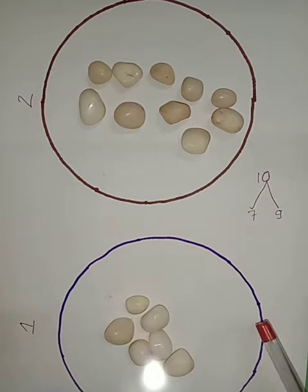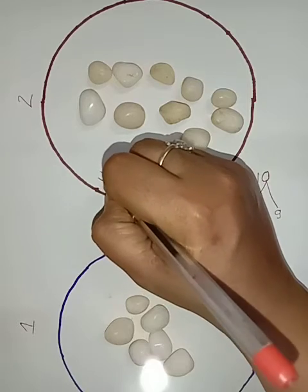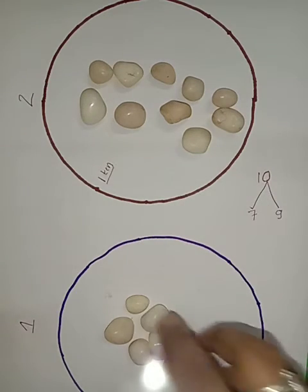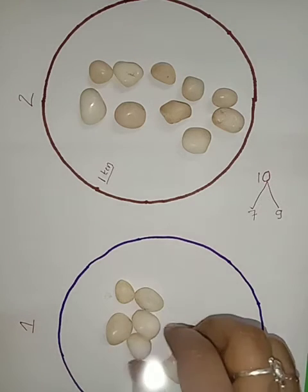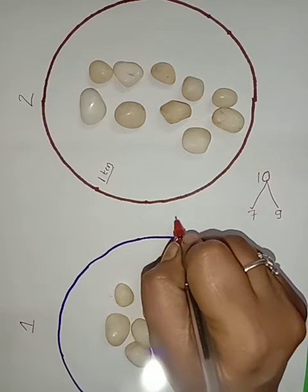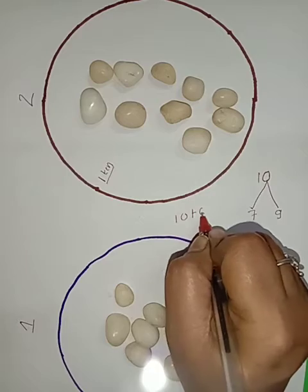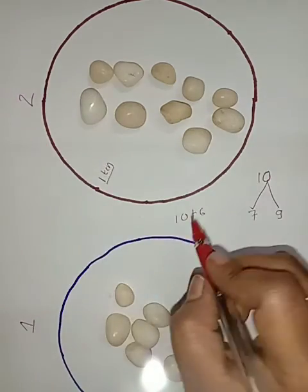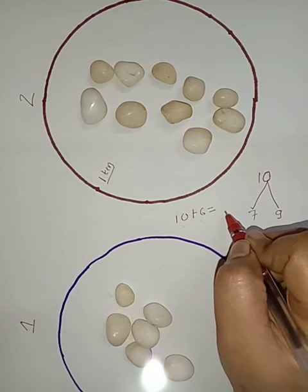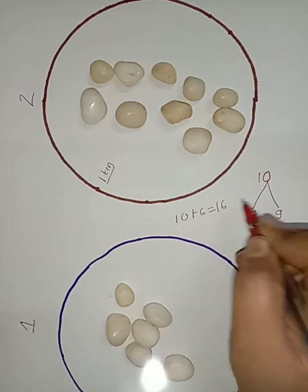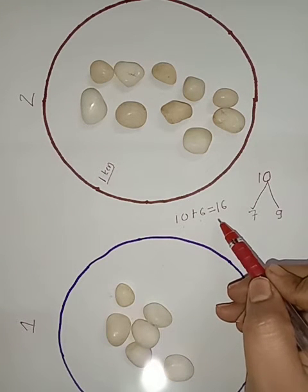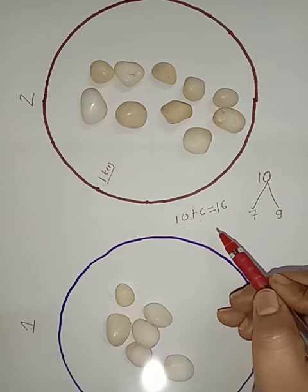So how many 10s are there in that number? 1 ten — it becomes 1 ten. After this, how many are left in circle 2? 1, 2, 3, 4, 5, 6. So what will be the value, children? 10 plus 6. Isn't it? Circle 2 is having 10 and circle 1 is having 6. So the value will be how much, children? 16. Isn't it? So like this way when you do addition it will be easy to find the correct and exact value.